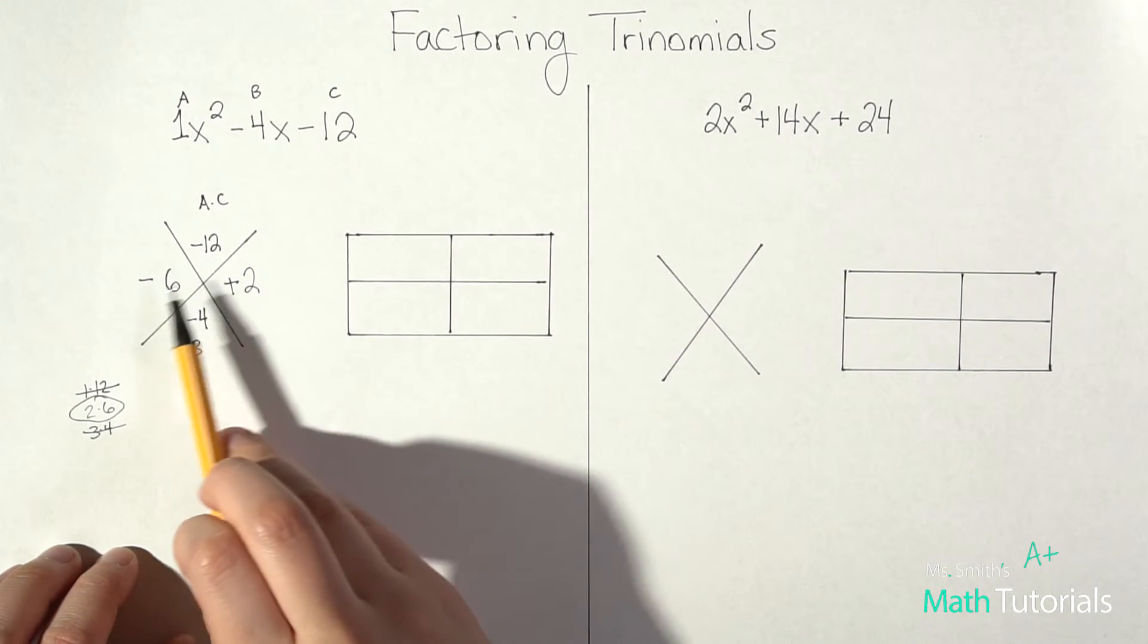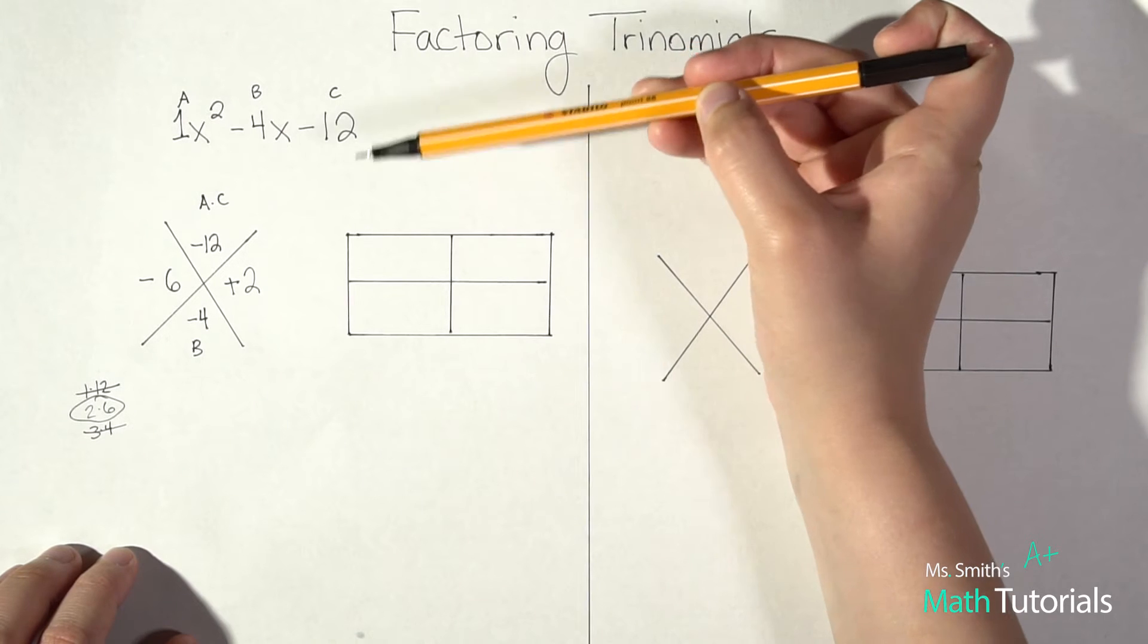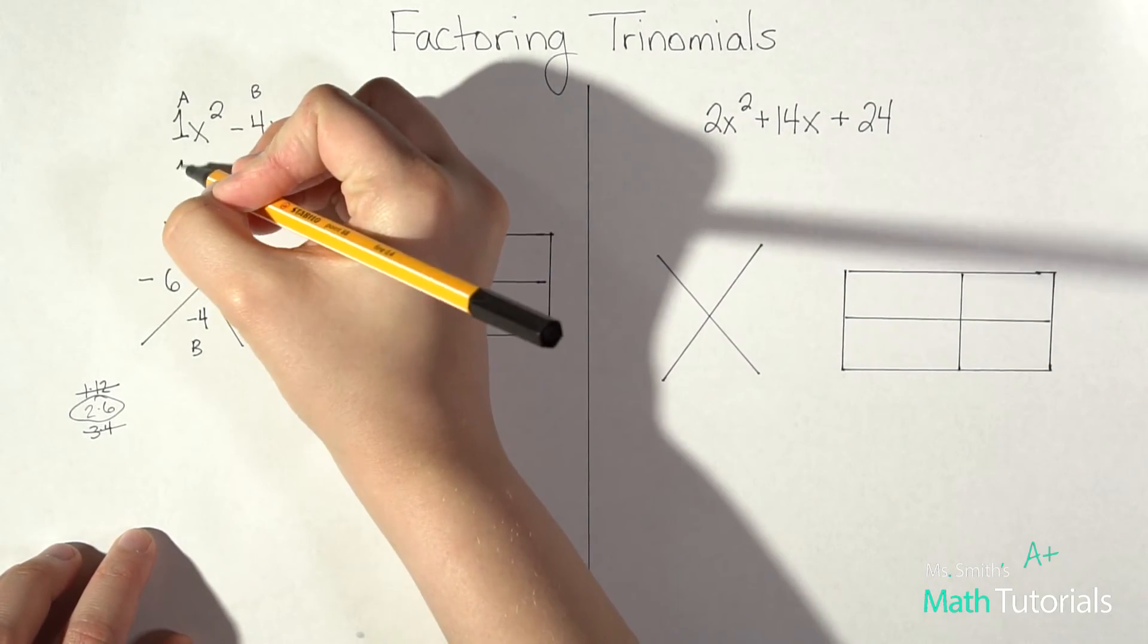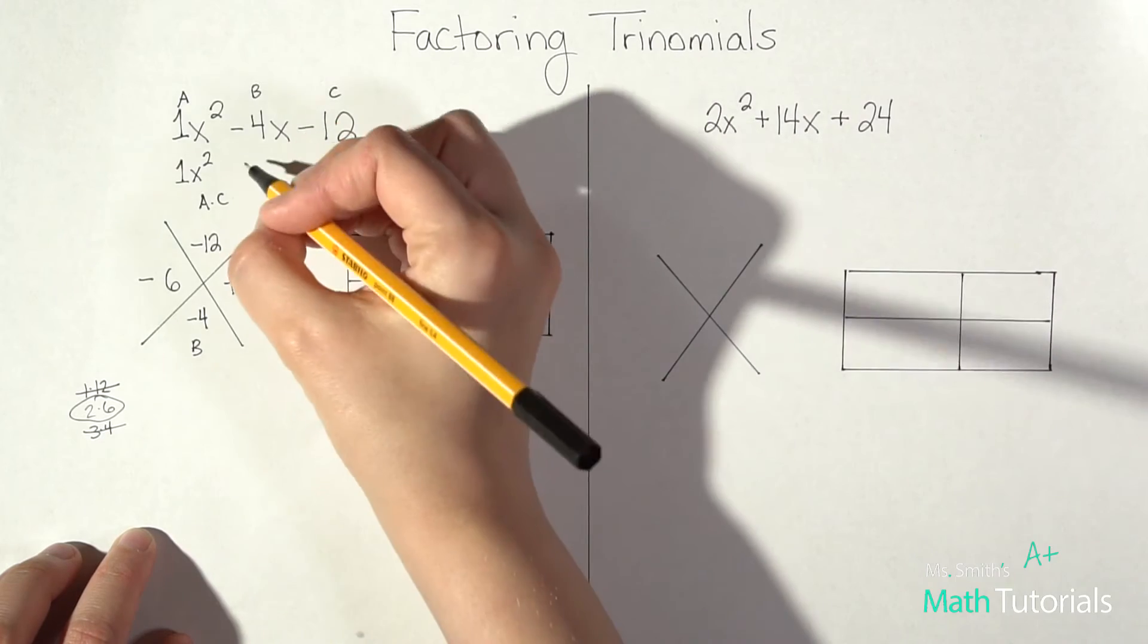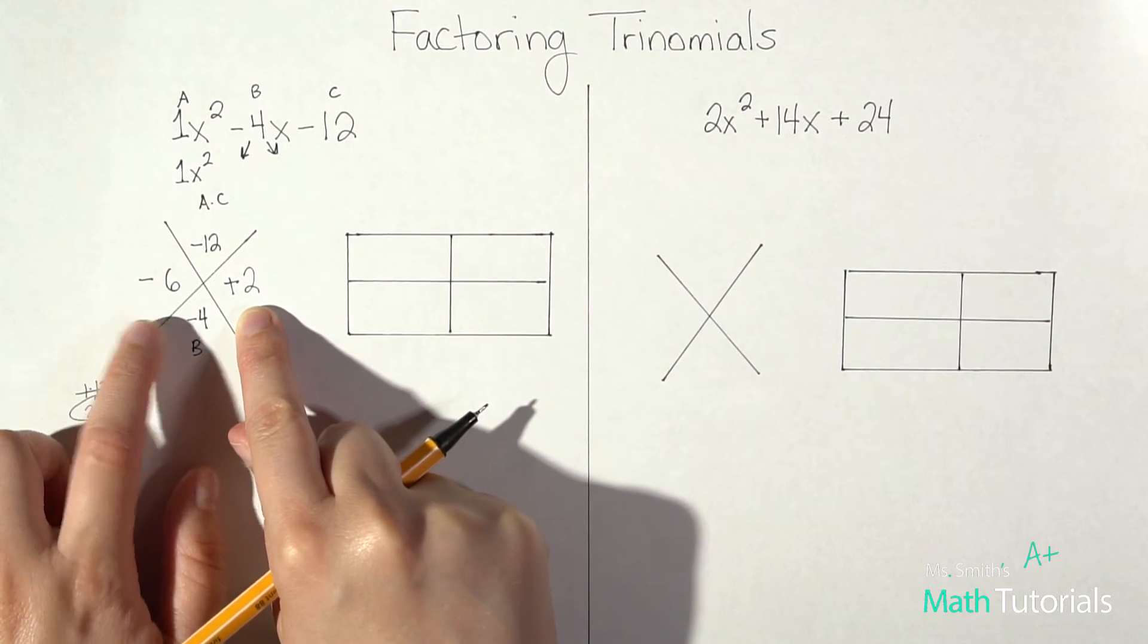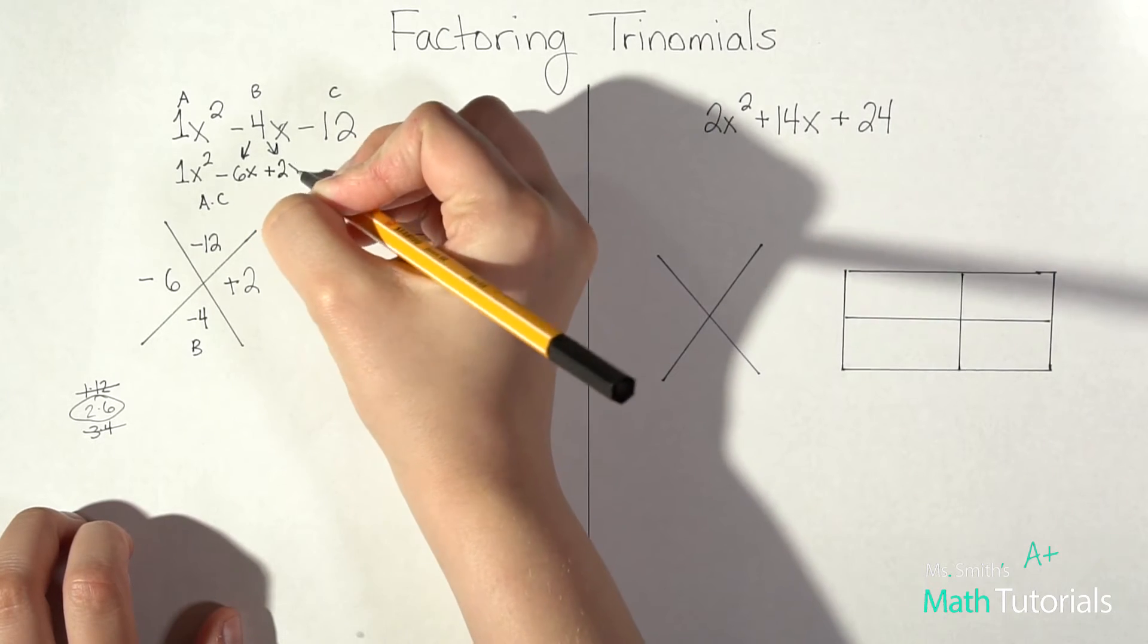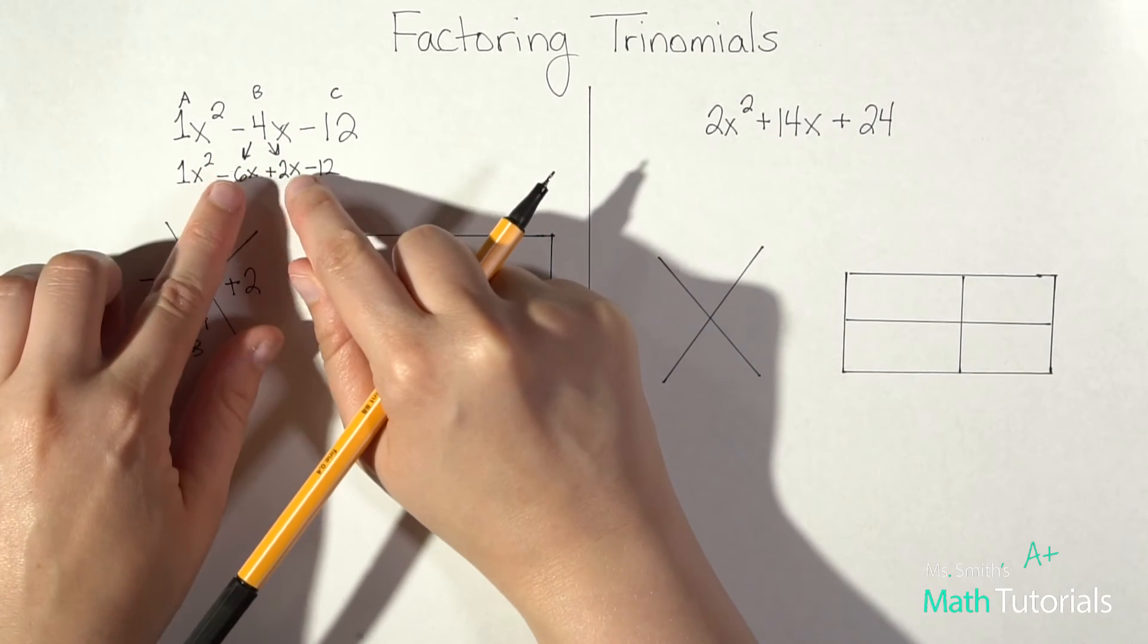So now that I've found two new terms using my AC method, what I'm going to do is rewrite this trinomial as a four-term problem. And this kind of comes back from my video on factoring a four-term polynomial. So you might want to review that video as well. So our A value stays the same. Our B value splits in 2. And it splits into our two new numbers that we found. So it'll be negative 6X and positive 2X. And our C value stays the same. So notice how that B just split into 2.